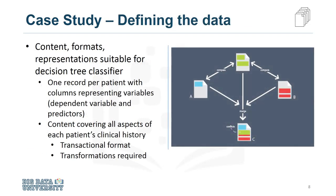Then the content, format, and representations of the data needed for decision tree classification were defined. This modeling technique requires one record per patient, with columns representing the variables in the model. To model the readmission outcome, there needed to be data covering all aspects of the patient's clinical history. This content would include admissions, primary, secondary, and tertiary diagnoses, procedures, prescriptions, and other services provided either during hospitalization or throughout the patient-doctor visits. Thus, a particular patient could have had thousands of records representing all their related attributes.